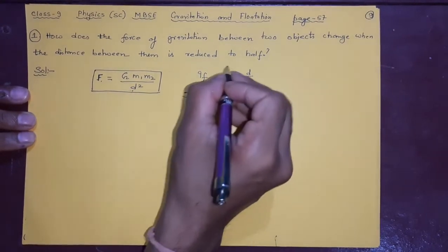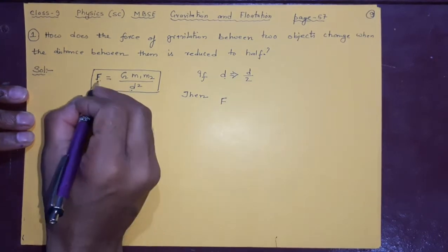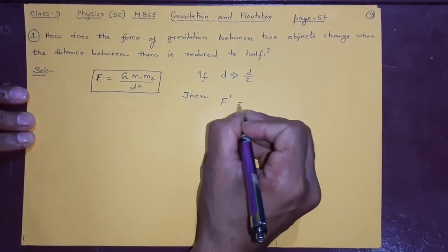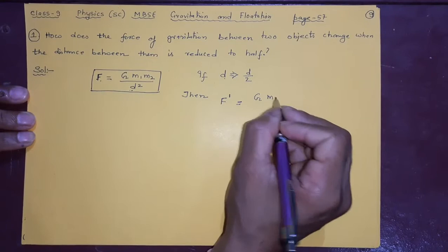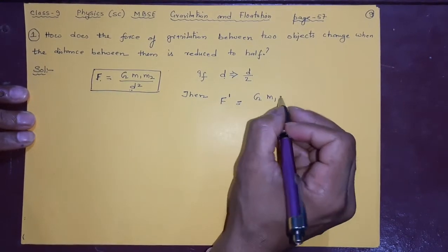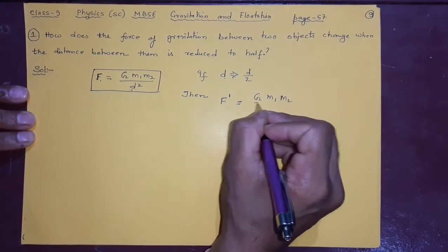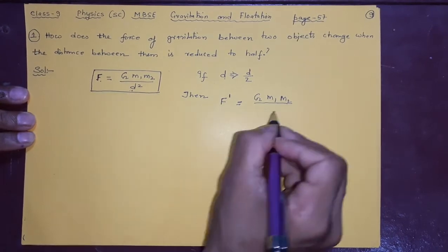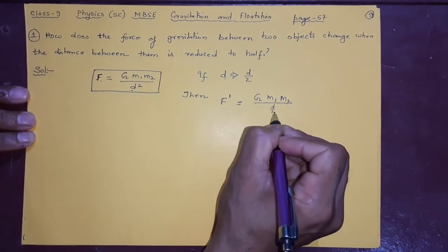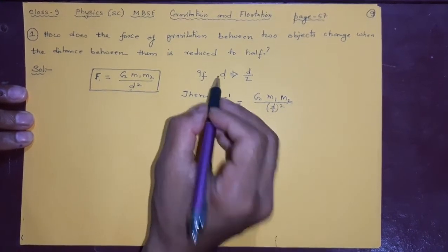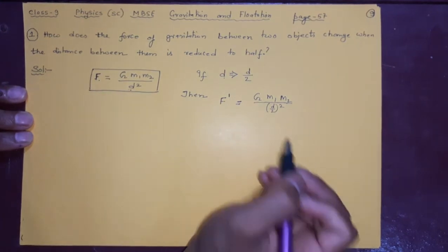F, suppose d has become this, so F has become F dash. G*m1 will not change because distance change means mass will not change, as it is m2. But we are going to change this d. In place of d I will write d by 2, understand? Because now d has become d by 2. So what will happen? Let us see. Again, G*m1*m2 divided by, d square, 2 square is 4 here.